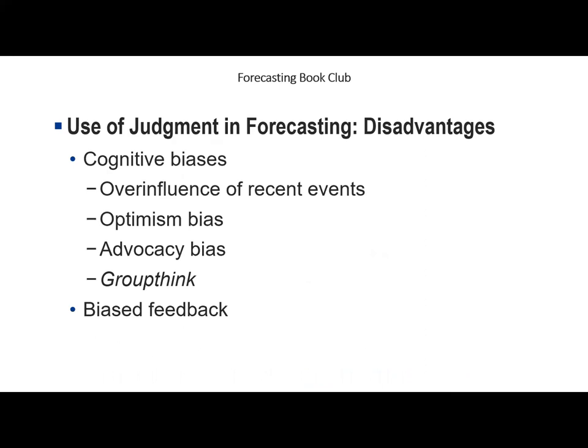As Fotios pointed out last week in chapter 9 on judgmental interventions, there are many potential disadvantages to relying on judgment. Paul identifies cognitive biases including: recency — being more influenced by a recent launch's success or failure; optimism — only remembering successes and ignoring the high percentage of failed new products; and advocacy — forecasting sales high enough to exceed the approval hurdle if you are the person with the new product idea.